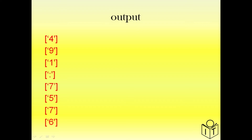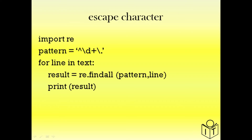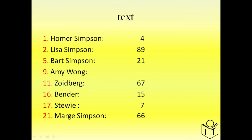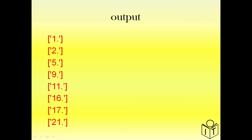Previously we just matched a digit at the beginning, but in fact we've got numbers that are more than one digit. Now if we want to match the dot that's after those numbers, we can't use the dot in the regular expression because that matches any character. Instead we use the escape character — so the pattern starts with ^ to begin the line, then \d+ for one or more digits, and then \. to match the actual dot character. Looking at our output we have the numbers and the dot extracted.